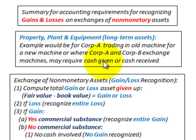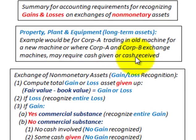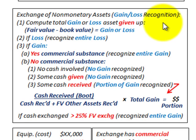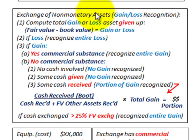It may require cash either given or cash received. So let's go through the step-by-step decisions we'd have to make to determine any gain or loss on this exchange. For exchange of non-monetary assets, the gain or loss recognition — step one — is to compute the total gain or loss of the asset given up.